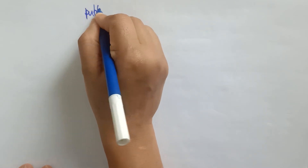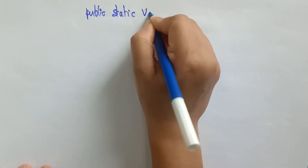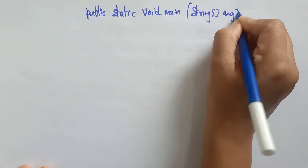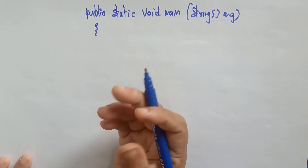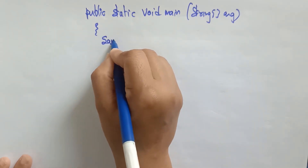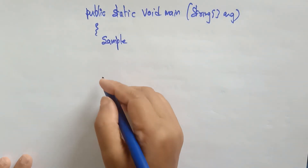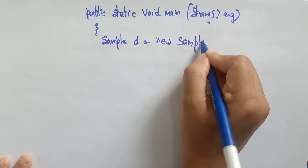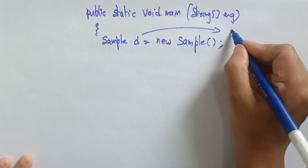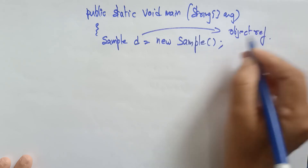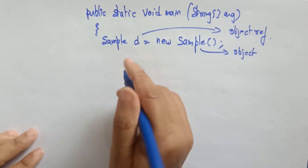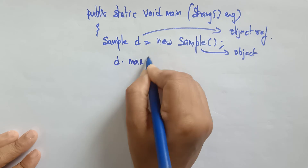Public static void main(String args[]). Here I'm calling my method using an object reference. To access an instance method by object reference, create an object: Sample d = new Sample(). So d is the object reference. To call the instance method: d.maximum(40, 36).